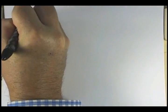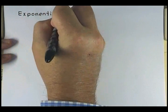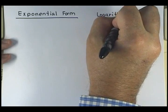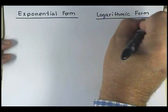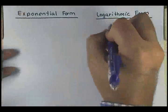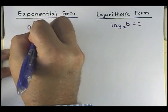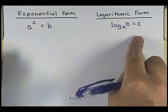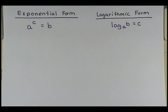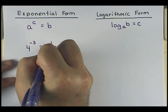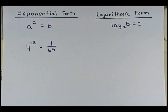Now let's go from exponential form to logarithmic form. Remember that in our logarithmic form, log B base A equals C — your base was A, your power is C, and that equals B. So now we want to go backwards. If I have 4 to the negative 3 equals 1/64, then I'm going to write this as the log base 4 of 1/64 equals negative 3.